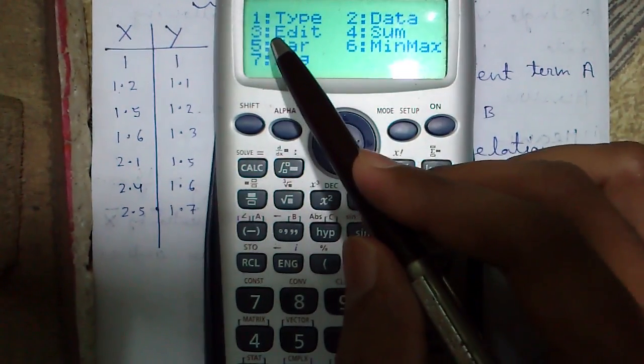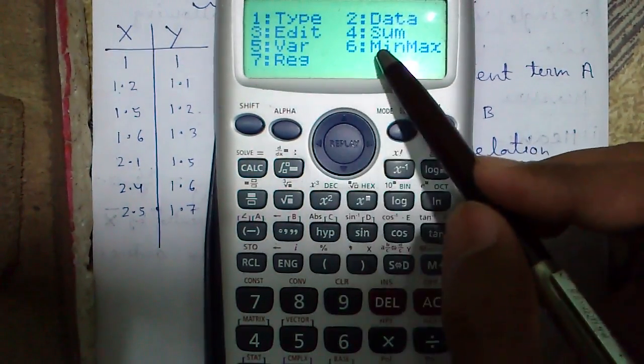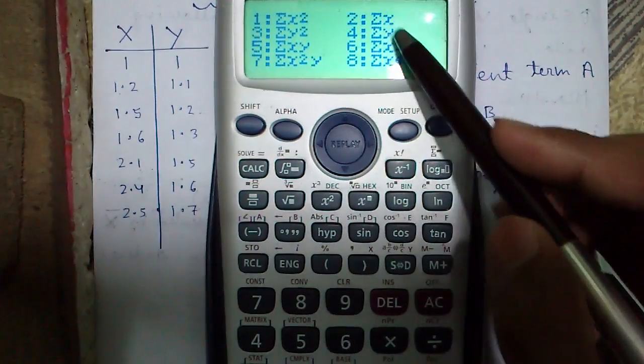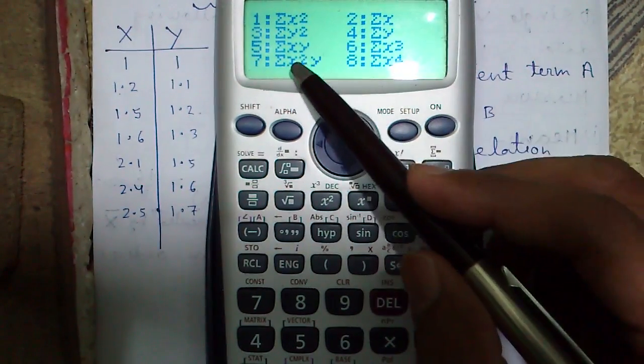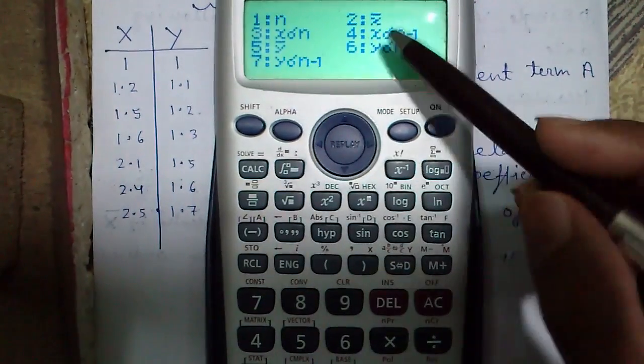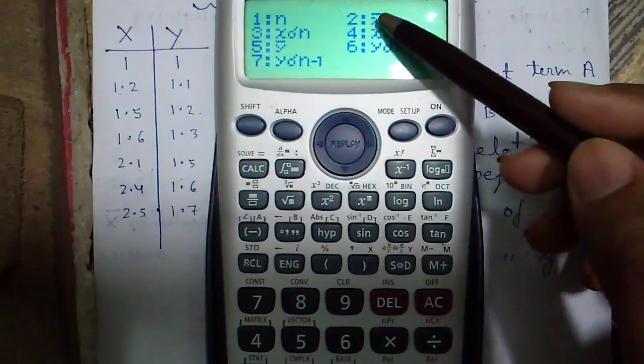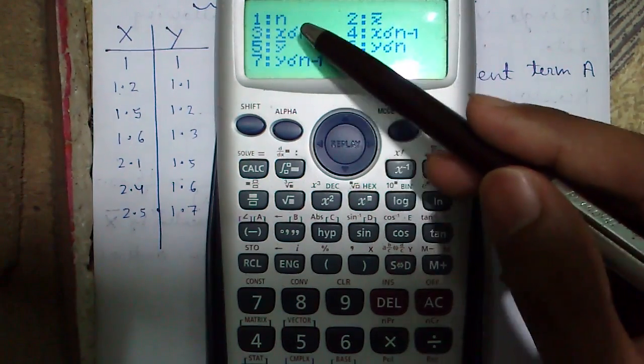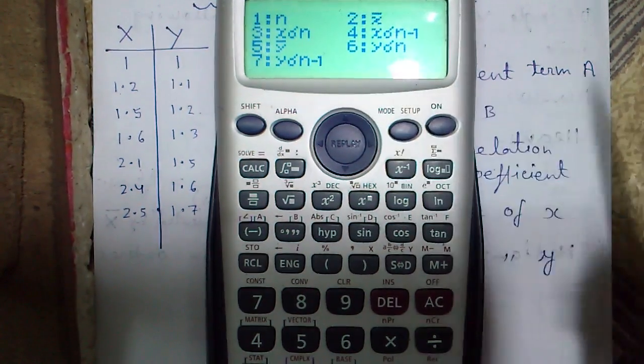The type, edit and data mode is same as single variable but in sum mode we have provided with many options like sum of x, sum of y, sum of x into y like this. And distribution mode, here is many options too like mean of x, mean of y, standard deviation of x, standard deviation of y etc.